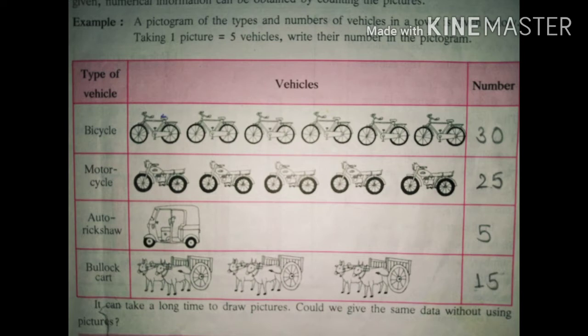Fourth, bullock carts. There are 3 pictures of bullock carts. So 3 multiplied by 5, that is 15 bullock carts are there in the town.